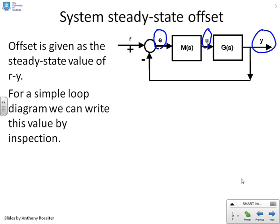Now the offset is given by R minus Y or E. It's one of the signals in the loop, nice and conveniently defined.